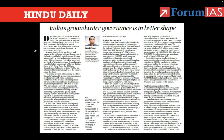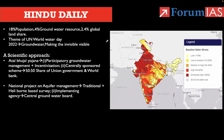Now let us see the fourth article: India's groundwater governance is in better shape. In the introduction, the author states that India shares 18% of the population but has 4% of the world's groundwater resources and 2% of the land share. He mentions the theme of the UN World Water Day: 'Groundwater: Making the Invisible Visible.'